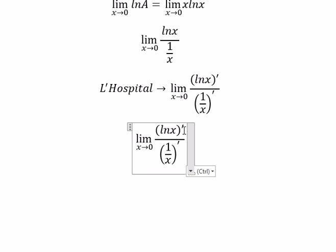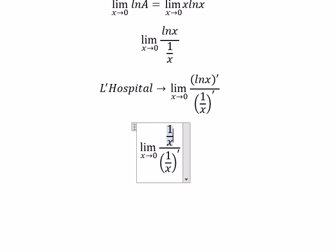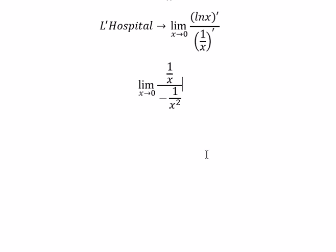So the derivative of ln x is 1 over x. The derivative of 1 over x is negative 1 over x squared.